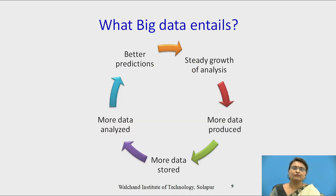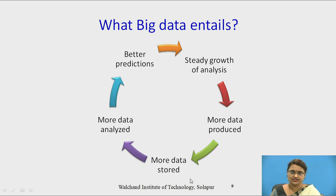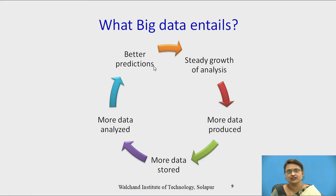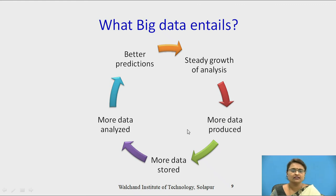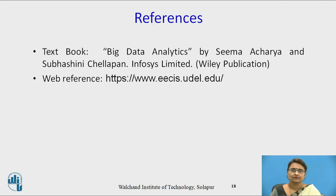What does Big Data entail? It starts with more data being produced, which means more data is stored. More stored data means more data can be analyzed, and more analysis automatically provides better predictions. Better predictions drive growth of analysis, which is steadily growing. This cycle repeats: more data is produced, more is stored, more is analyzed, and finer predictions are provided. This concludes the video. Thank you.